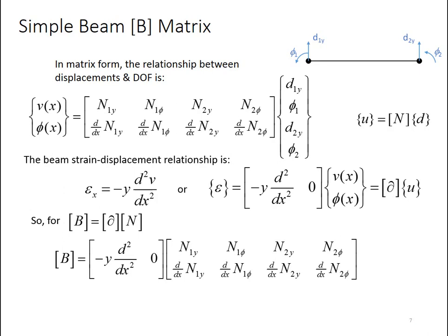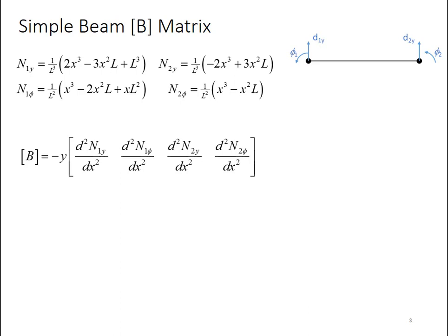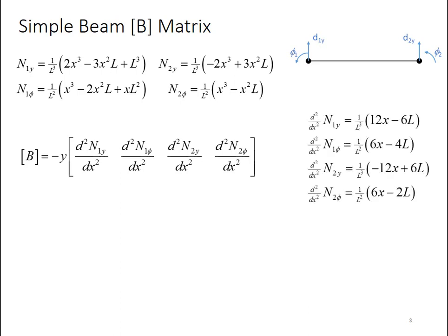So now B is simply the product of those two. Put them out, multiply them, and we find that B is negative y times the row matrix d²n1y/dx², d²n1_phi/dx², and so on. So the second derivative of each of the shape functions that we've defined. Now since the shape functions are known and are the same for all of these simple beam elements, we can actually evaluate the second derivatives here. So B is equal to that. Each of the second derivatives is a fairly straightforward differentiation. So I've done that for you here.